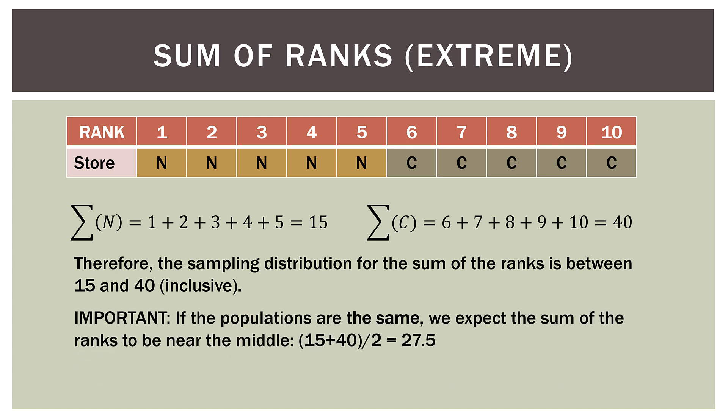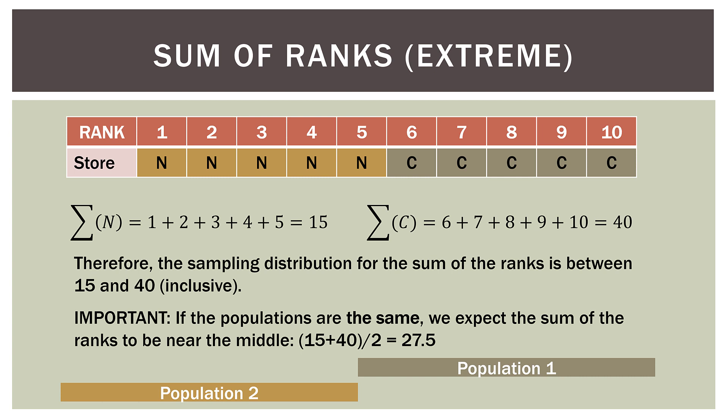This is important: if the populations for each store are the same in terms of scores and ranks, we would expect the sum of ranks to be near the middle. The low end is 15, the high end is 40, and the middle is 27.5. But in this extreme case, we have one extreme of 15 and the other extreme of 40 — all of Churchgate's ranks on one side, all of Natterman Point's ranks on the other, with no overlap at all. Therefore, we would reject the null hypothesis, since these two populations are obviously not equal.